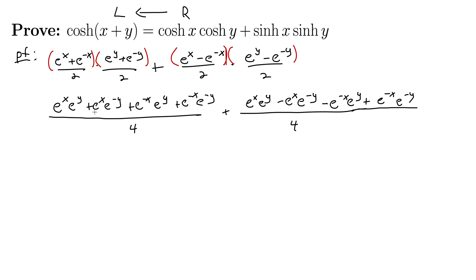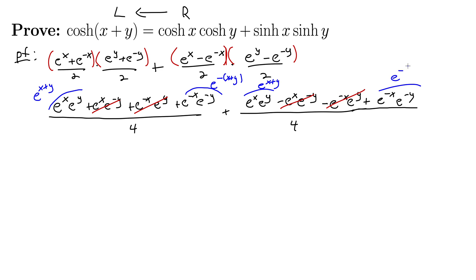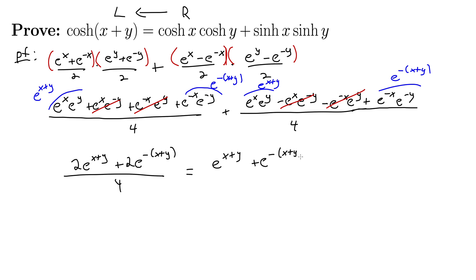We have plus e to the x e to the minus y and minus e to the x e to the minus y — those cancel. And plus e to the minus x e to the y and minus e to the minus x e to the y — those cancel too. Now we rewrite e to the x e to the y as e to the x plus y, and e to the minus x e to the minus y as e to the minus x plus y, using properties of exponents. Combining everything, we get 2 e to the x plus y plus 2 e to the minus quantity x plus y, all over 4, which simplifies to e to the x plus y plus e to the minus quantity x plus y, all over 2. Which is indeed cosh of x plus y.